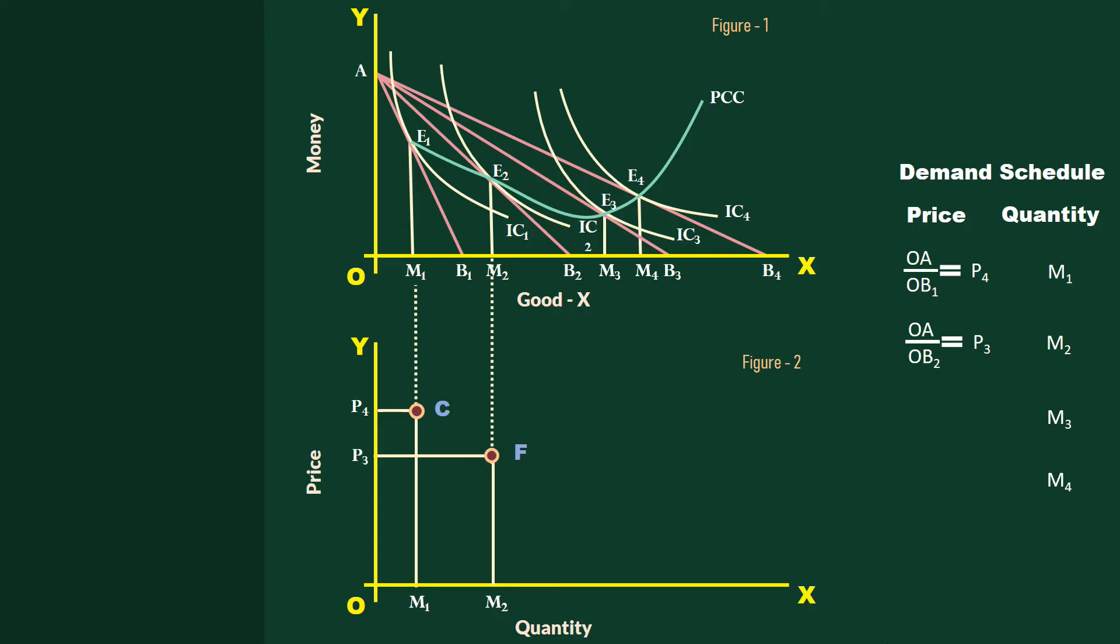The corresponding prices are OA by OB3, that is P2, and OA by OB4, that is P1.